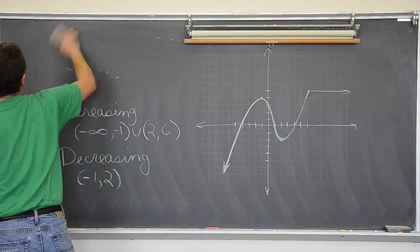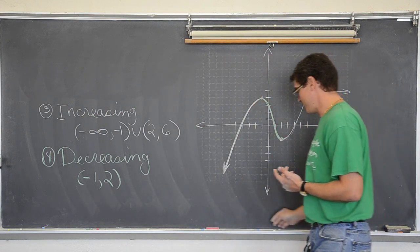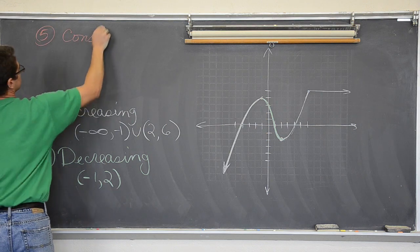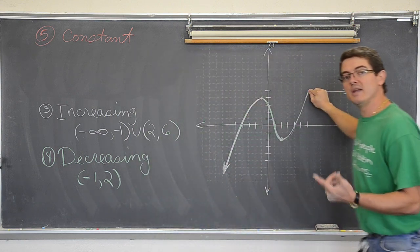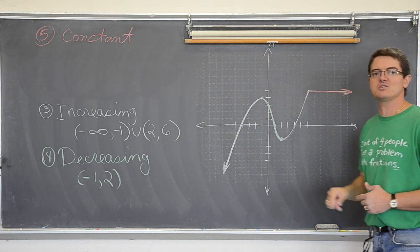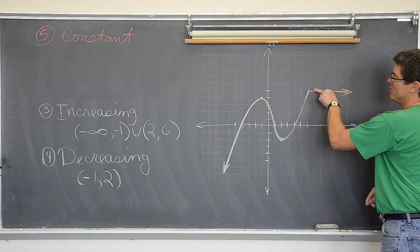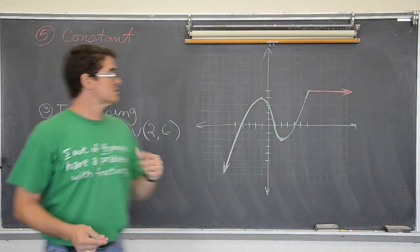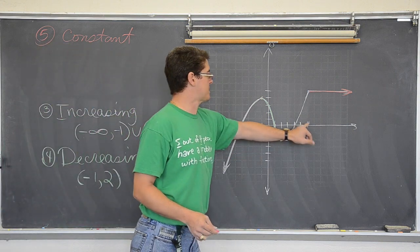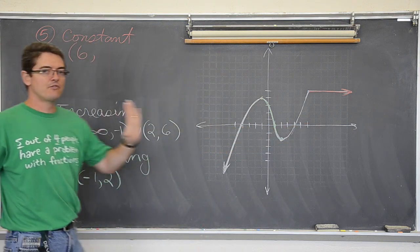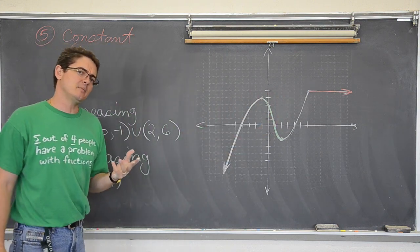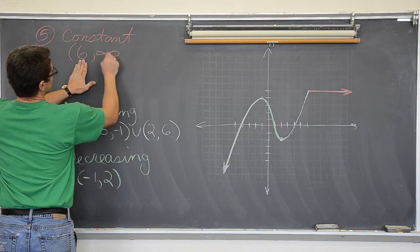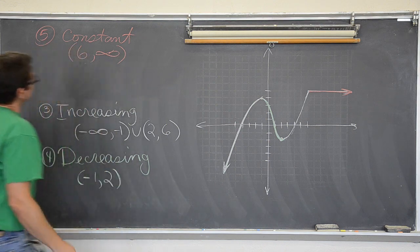What about this idea of constant, which you might have heard about? Where is the graph constant? Where is the graph, as you read it left to right, not changing? Well, there it is right there. Along these values, the graph, the x is increasing, but the y is staying the same. That means the graph is constant. So the graph is constant from an x value of 6, and then it goes to the right forever. So if you are doing inequality notation, that means it is a constant where x is greater than 6. In interval notation, it starts at 6, and it goes to infinity, and beyond!